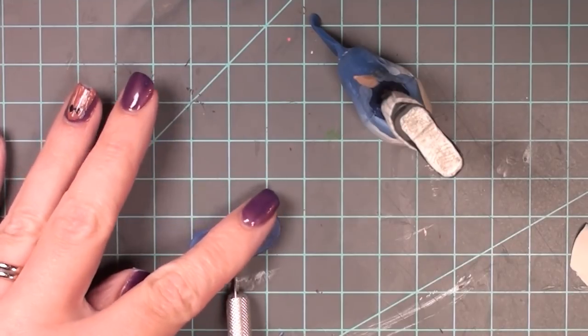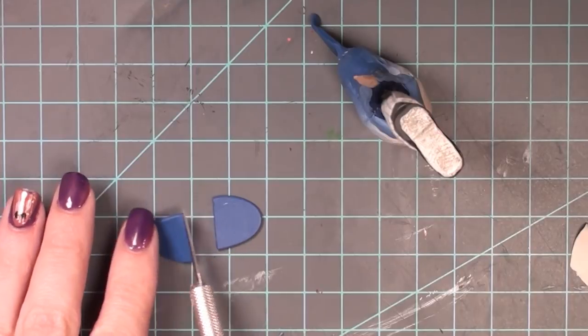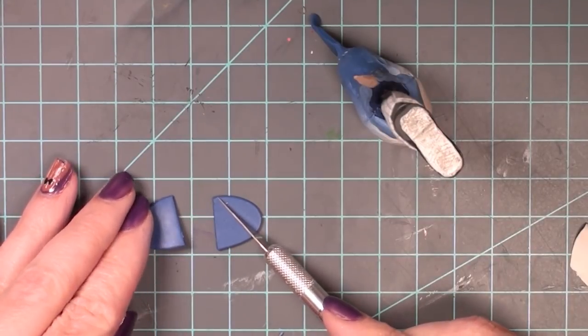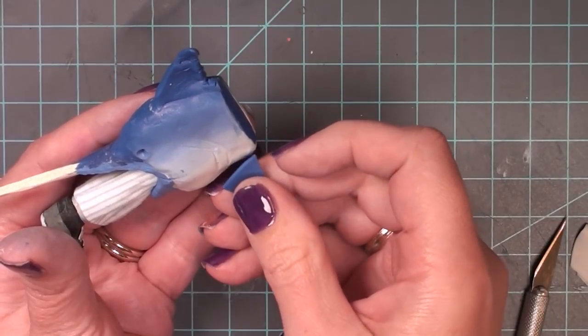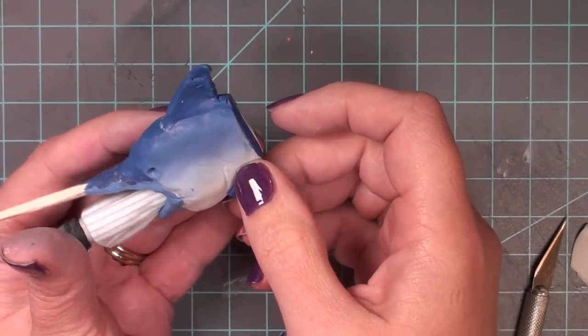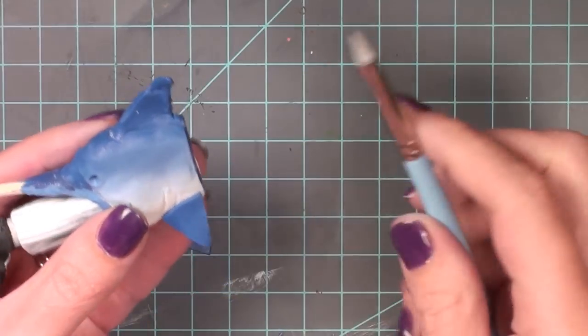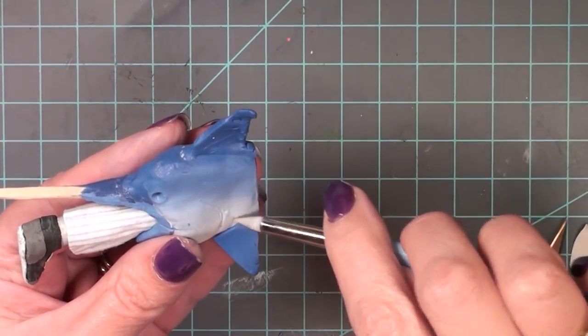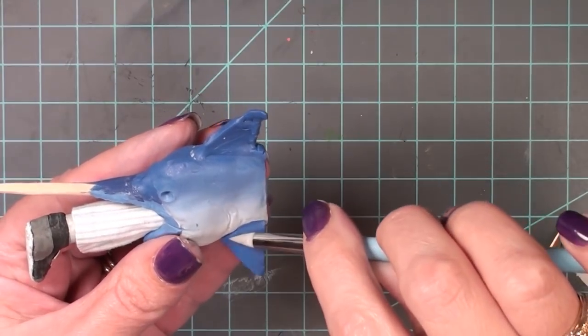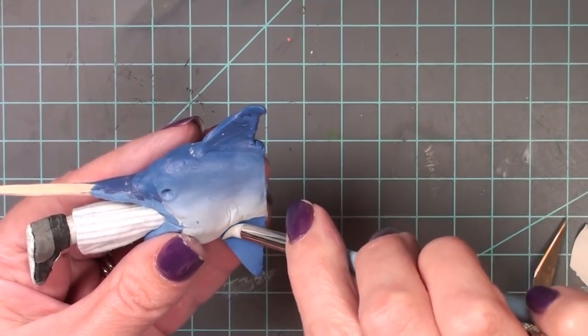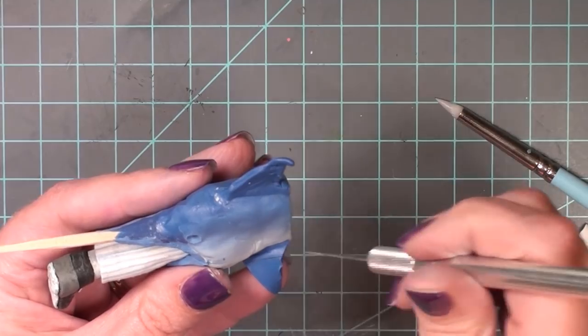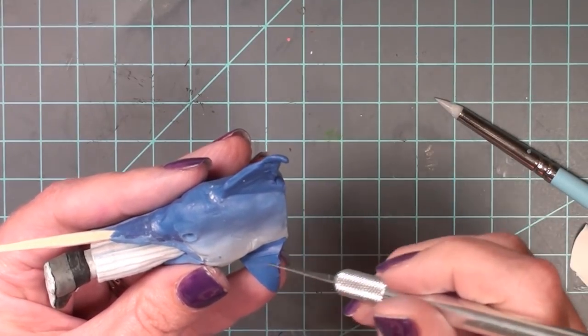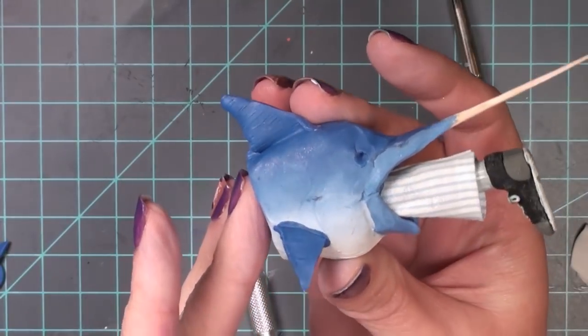Now I want to make the two front fins that go on either side of the fish, so I'm just cutting some clay into triangles and then attaching them and smoothing them into the body. These are actually pretty fragile, so make sure you're careful. I already broke one of the fins off and had to reattach it, so just be mindful of that. I used my exacto to get a little bit of texture into the fin.